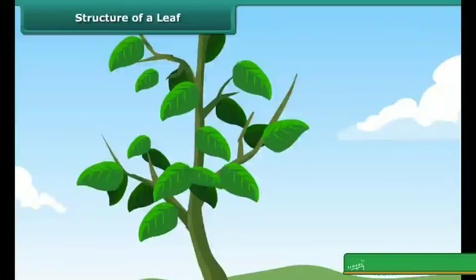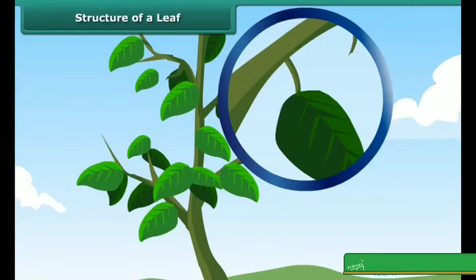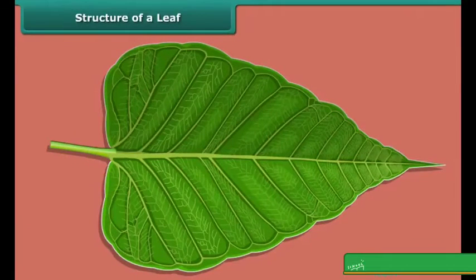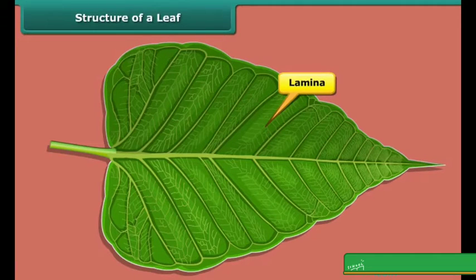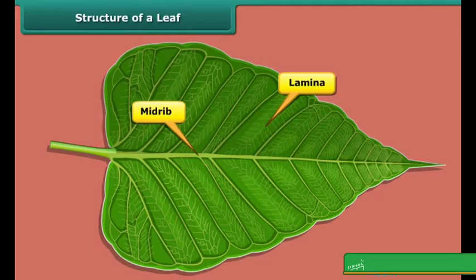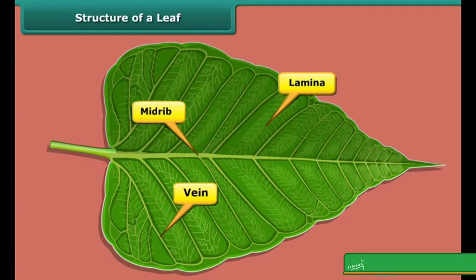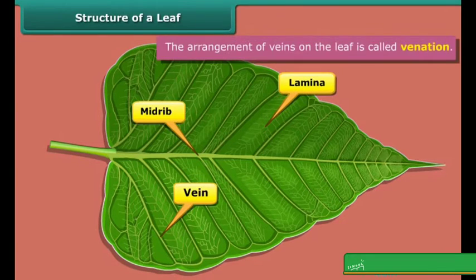The part of a leaf by which it is attached to the stem is called the petiole. The broad green part of a leaf is called the lamina. You already know about this from Class 5. Small lines present on a leaf are called veins. These give support and transport water and minerals through the leaves. A thick vein in the middle is known as the midrib. The arrangement of veins on the leaf is called venation.